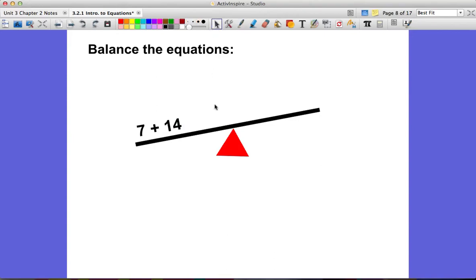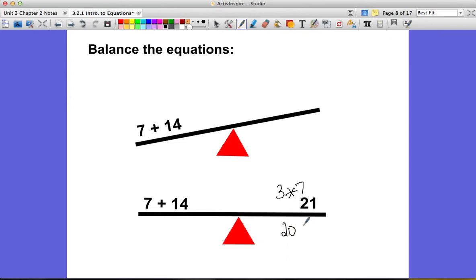So when you're balancing the equation, you just want to look for what's going to straighten out your balance. In this case, we have 21. You could also put, instead of 21, you could put 3 times 7, because 3 times 7 is also equal to 7 plus 14. Or you could also put 20 plus 1.